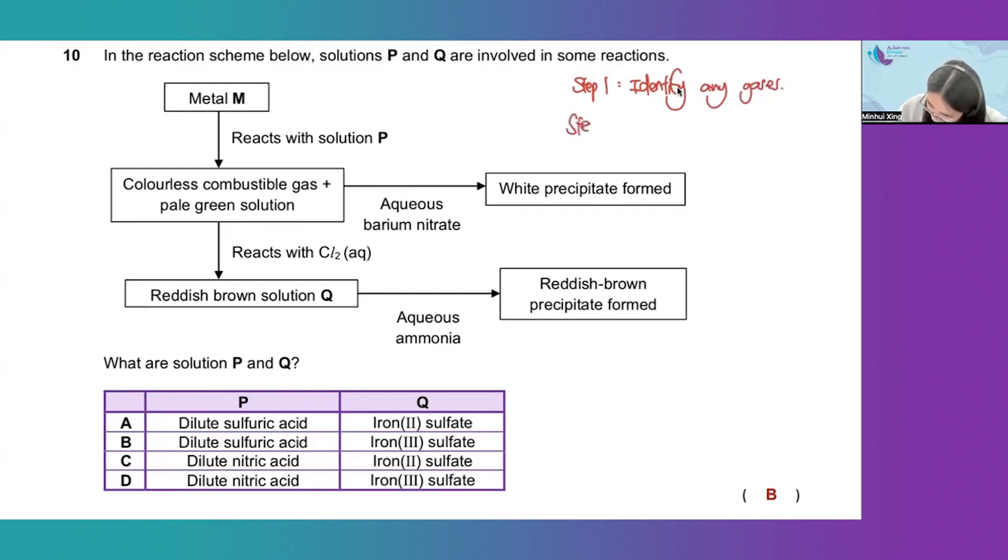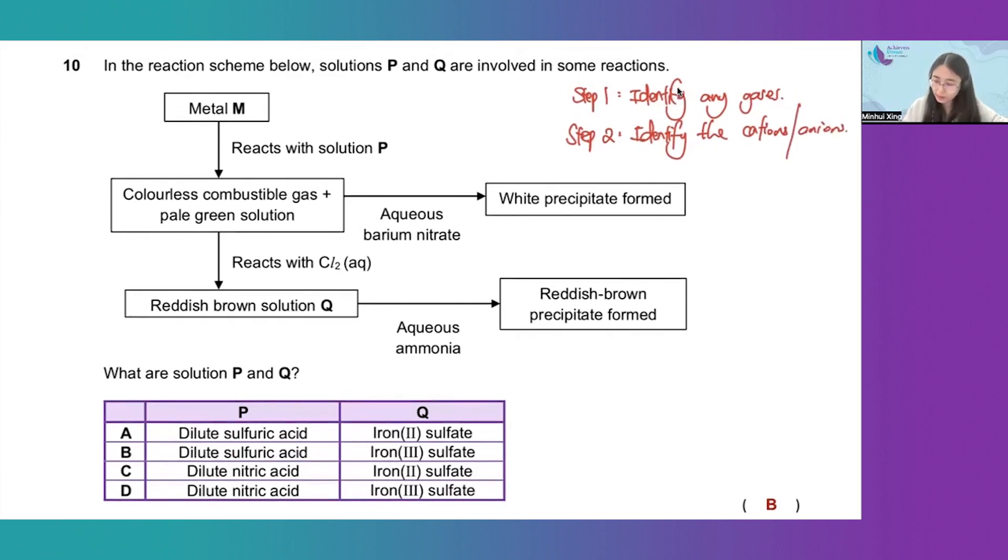Then step two, identify the cations or the anions. In this case, there are no gases to be identified, so we can move on to step two.